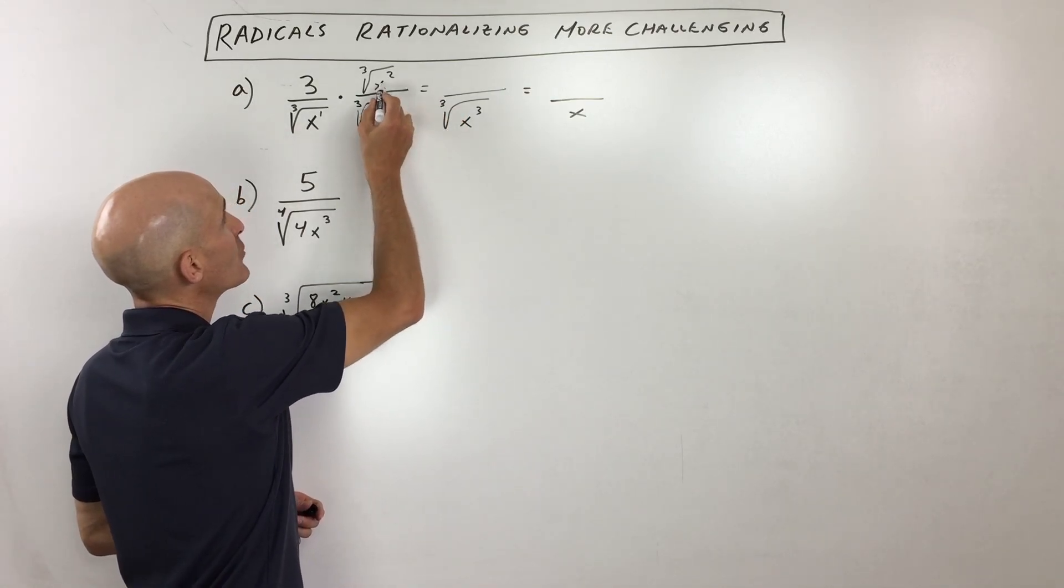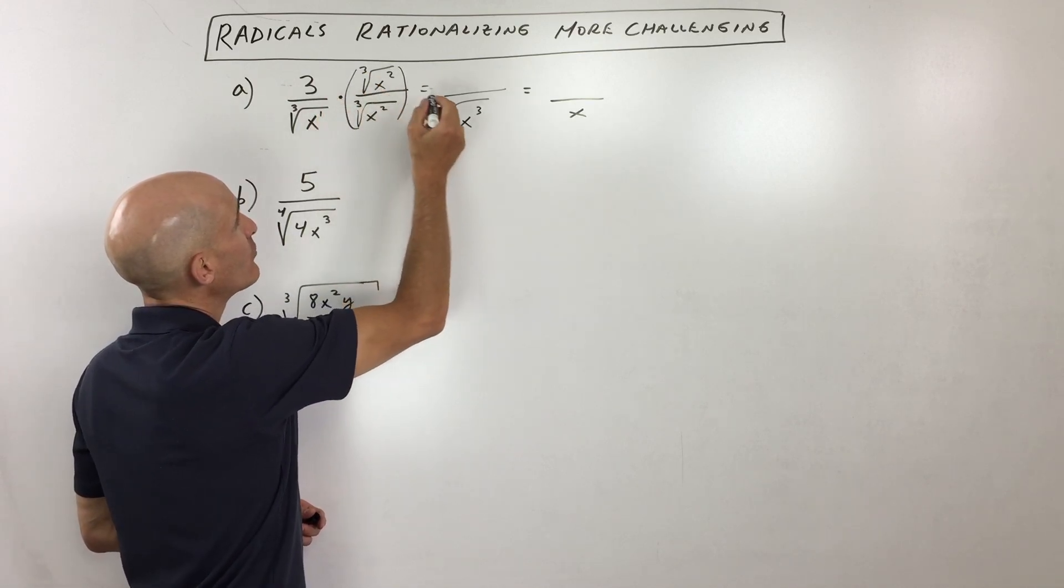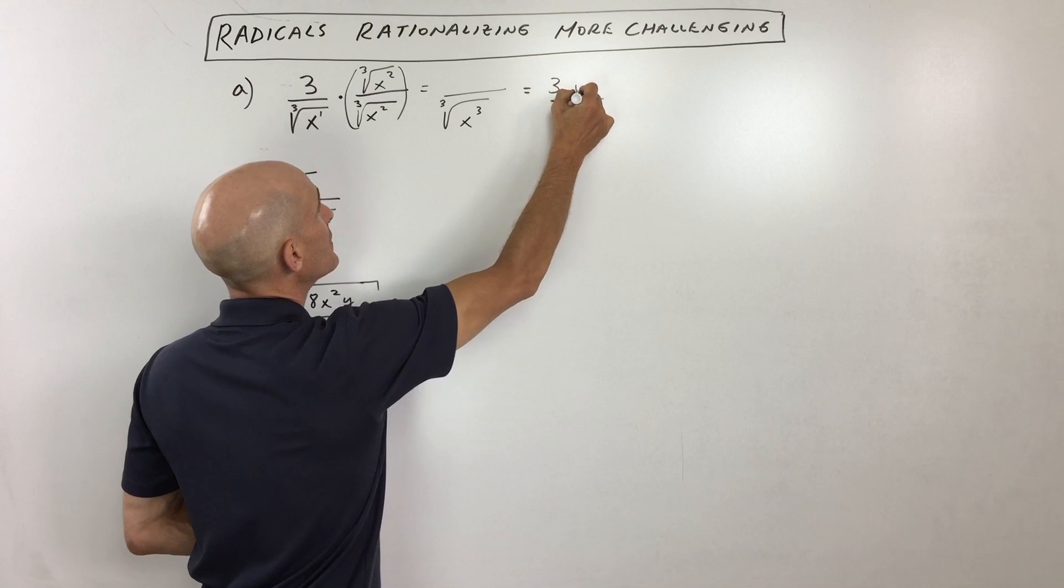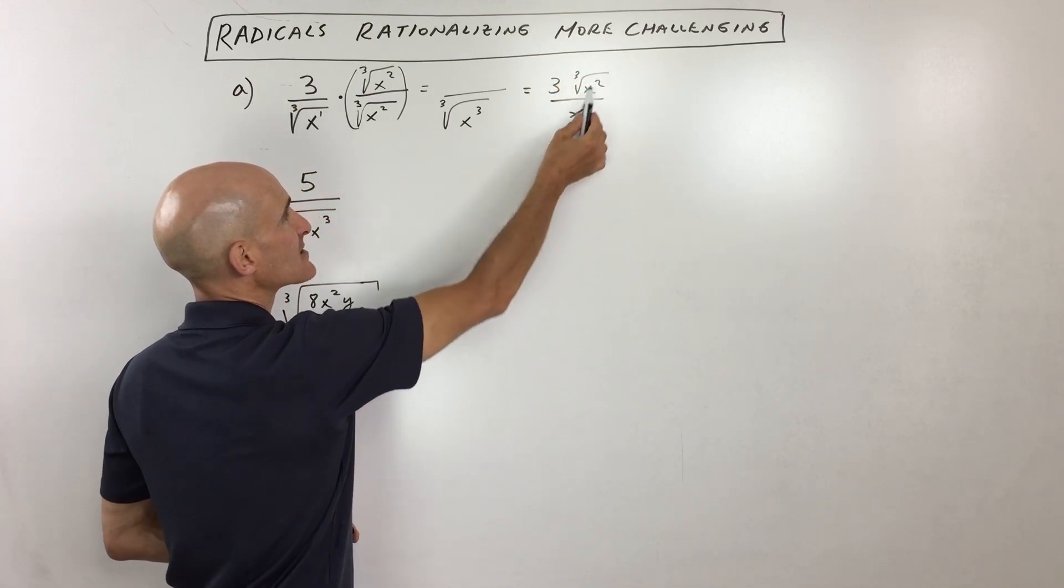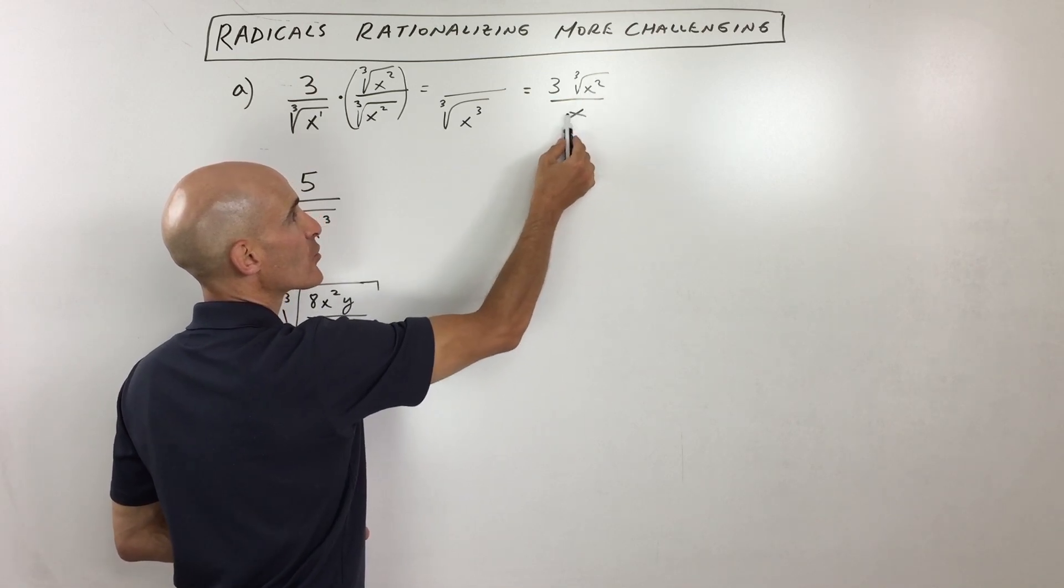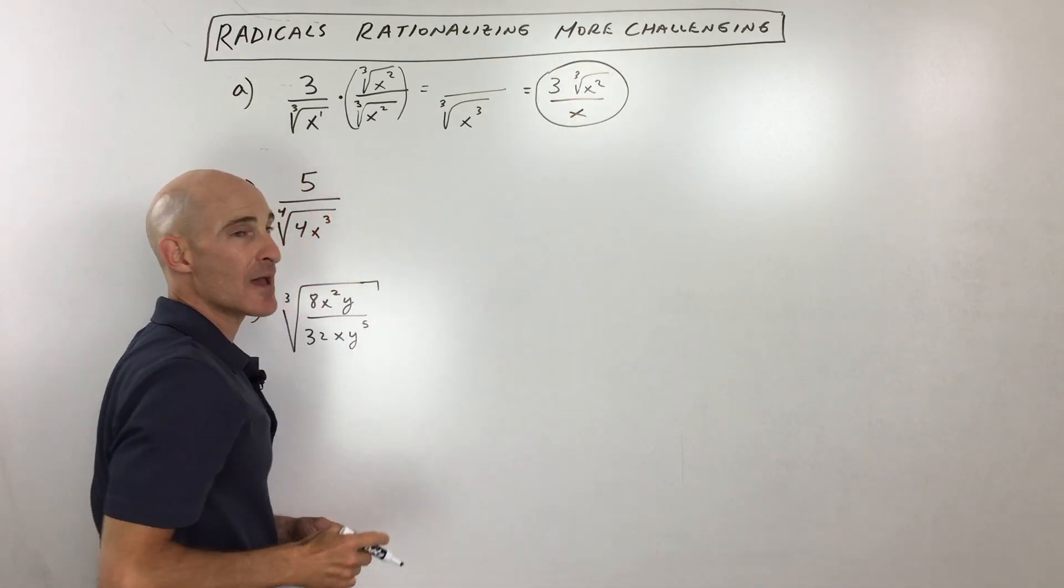But remember, whatever you do to the denominator, you want to do to the numerator, because this is really like multiplying by one. So now if we multiply, we just get three cube root of x squared all divided by x. Now you can't reduce these because one's underneath this radical here, one's outside of the radical. That's as far as we can go. So that's example A.